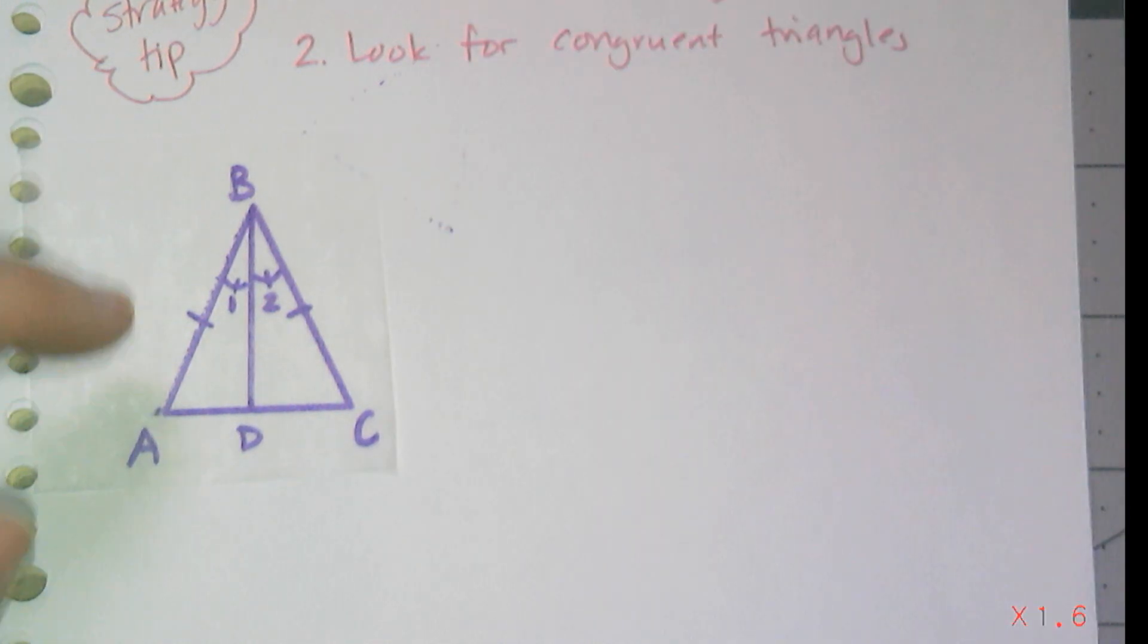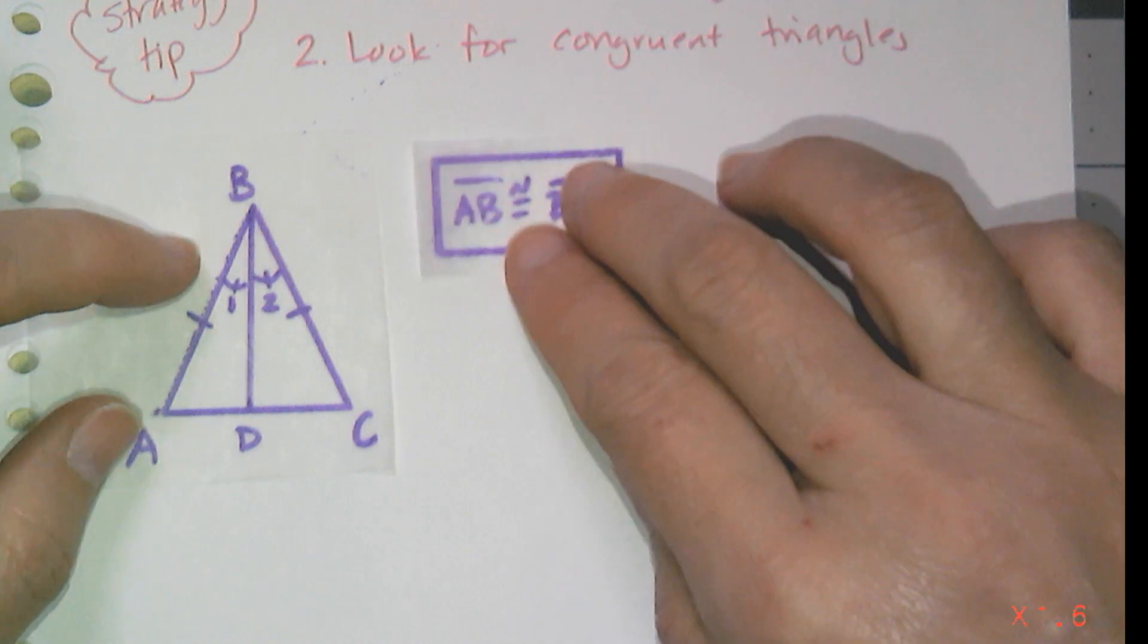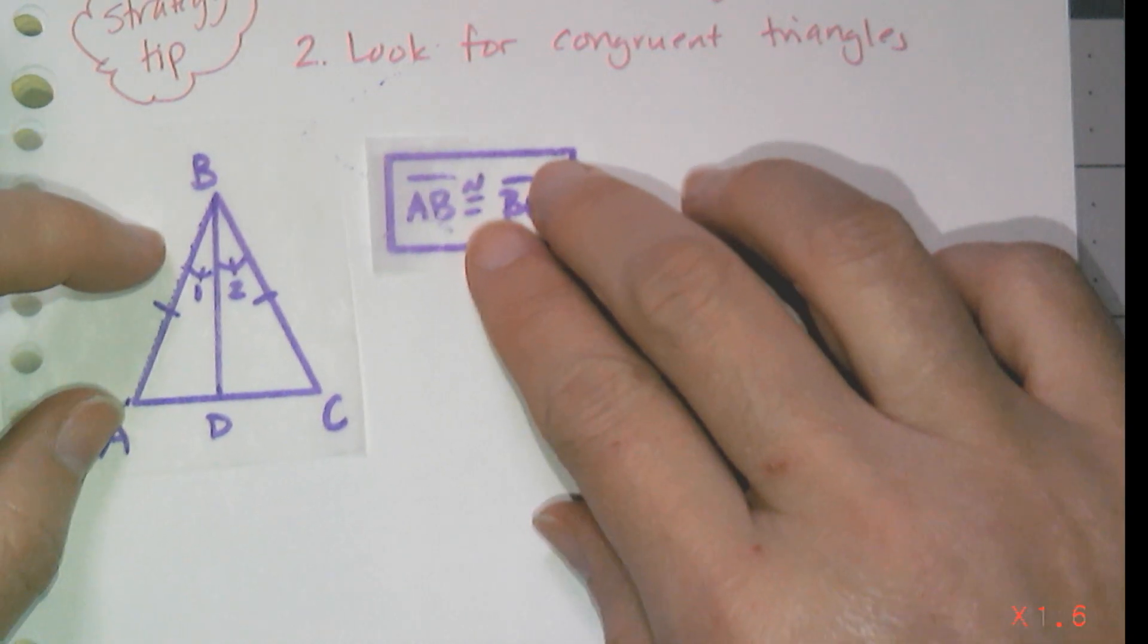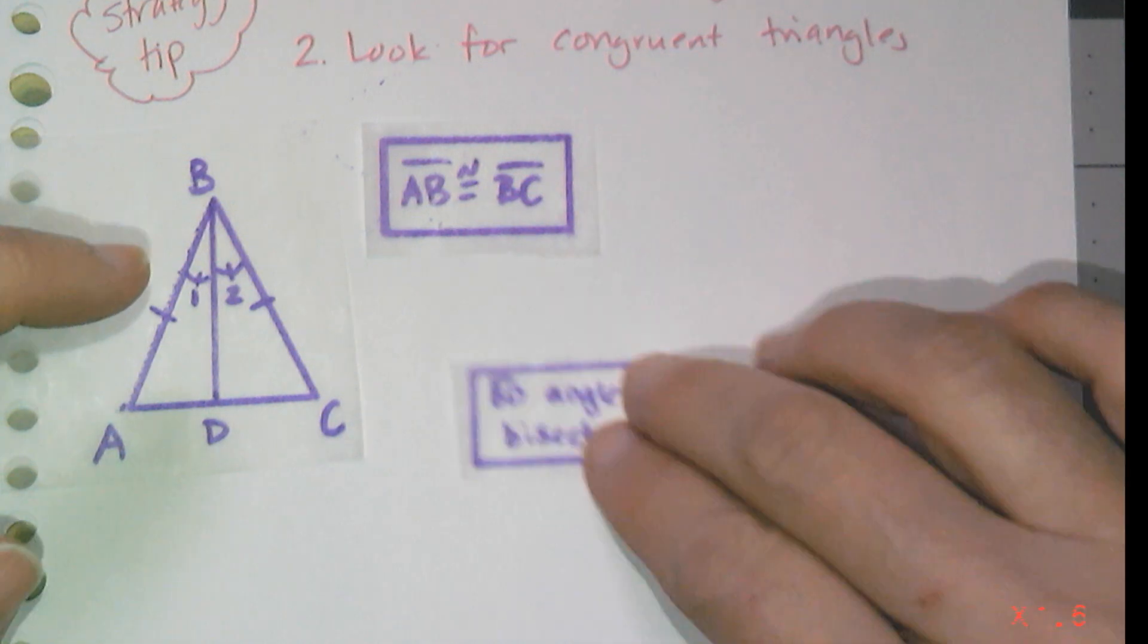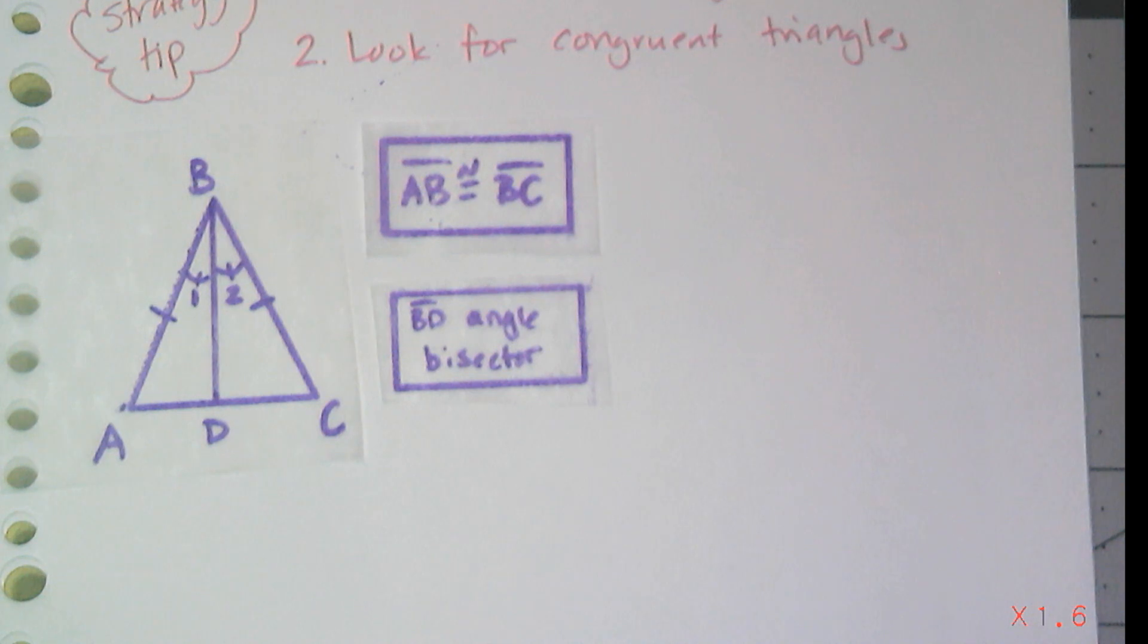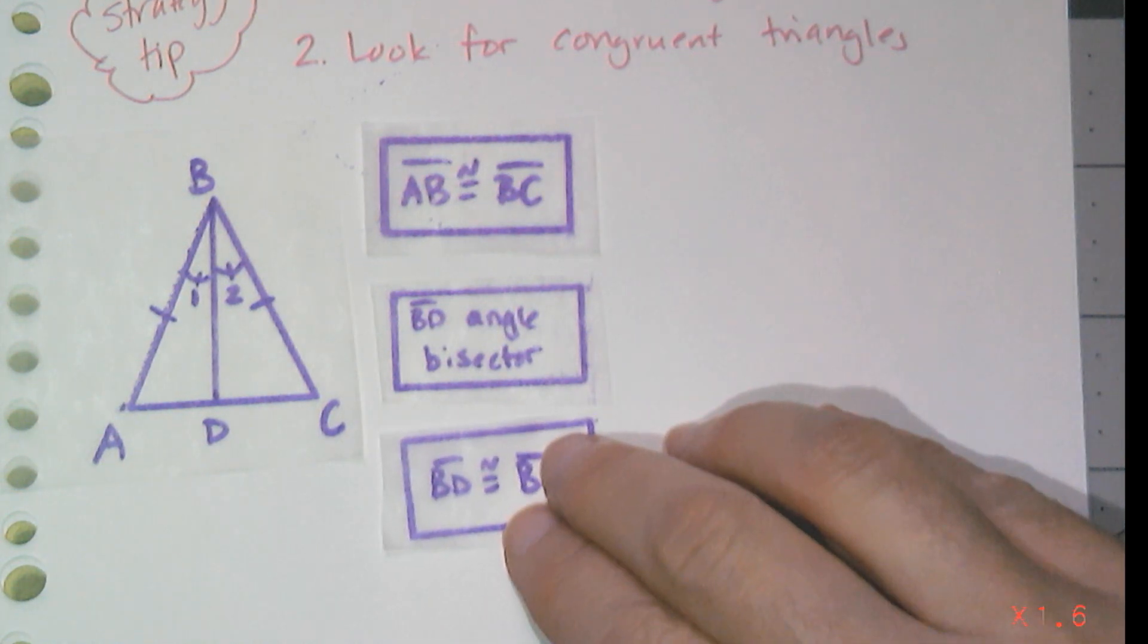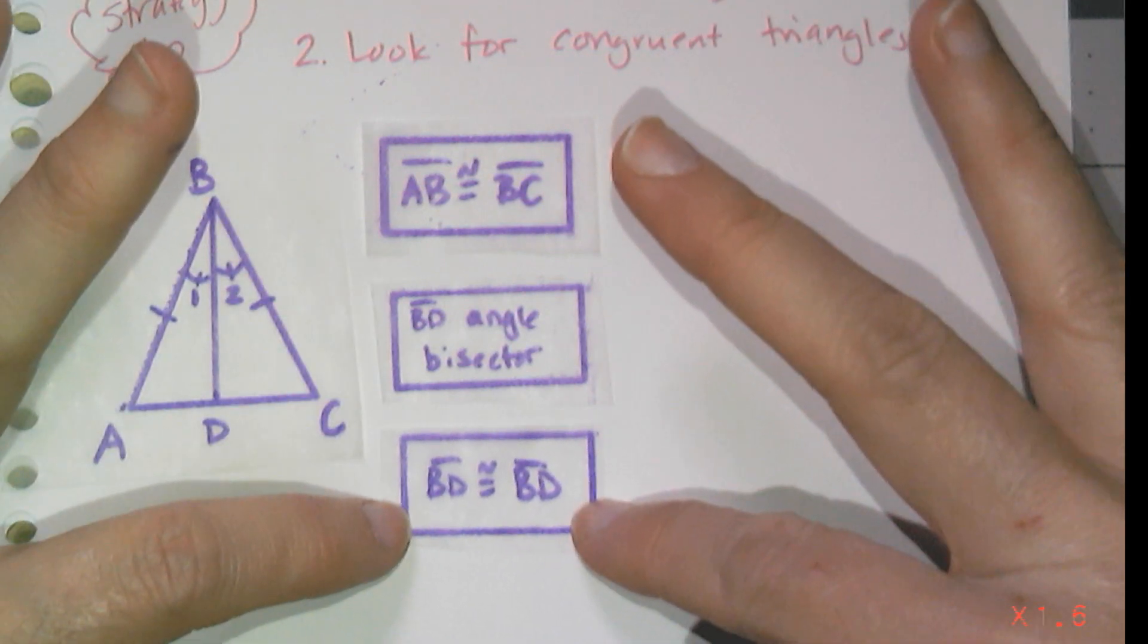So I know that AB is congruent to BC. So this is one of the things that I've been given. And I also know that BD is the angle bisector of angle ABC. And I also know that this line segment BD is congruent to itself by that reflexive property. So I have these three facts that I know. This was given. This was given. And this I can prove by the reflexive property.